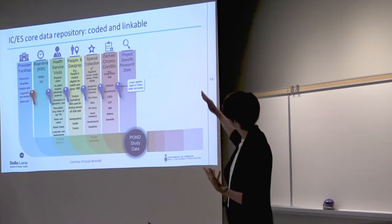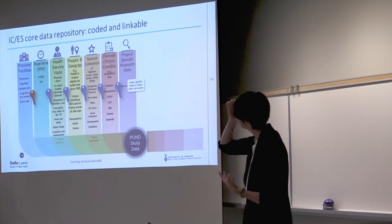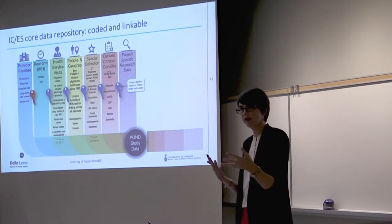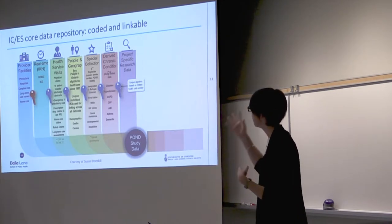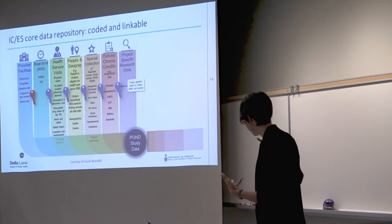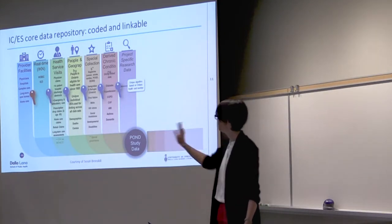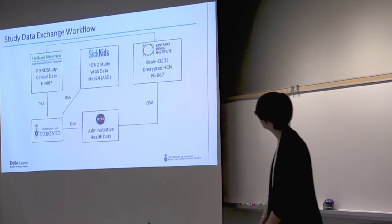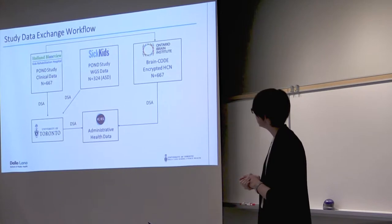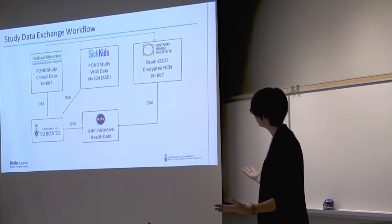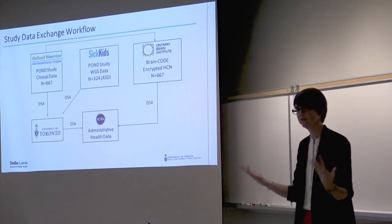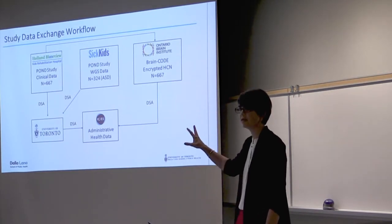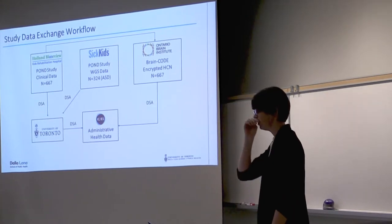There's also a derived chronic conditions component where they have developed algorithms using the administrative data to identify individuals with certain conditions — so this is where you can get some information on comorbid conditions. And then all of this can end up being linked with your project-specific research data. So in this case, we're talking about the POND study data. Everything except the sequencing data is at ICES and linked, and as mentioned, we're waiting for the sequencing data to be called.